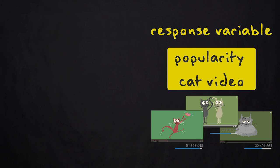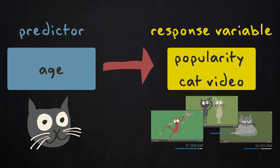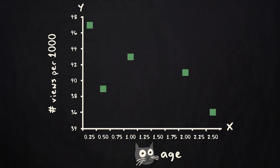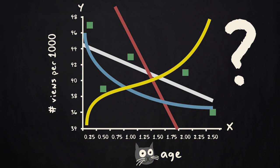Suppose I want to predict the response variable popularity of cat videos, measured as number of views, using the cat's age as the predictor. I collect some data from online cat videos resulting in this scatterplot. The question is, what line gives us the best predictions?